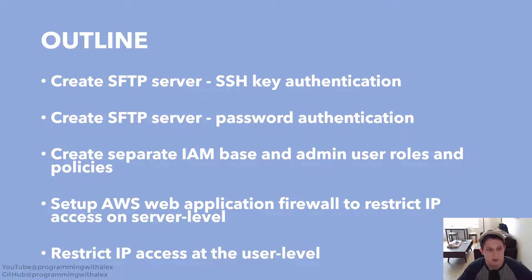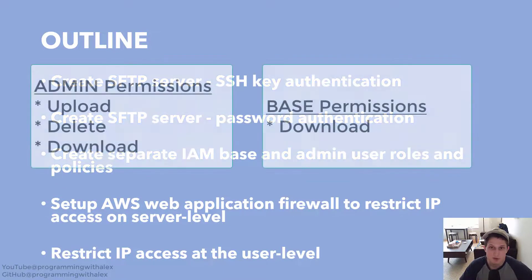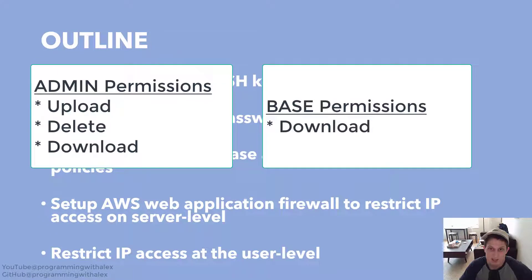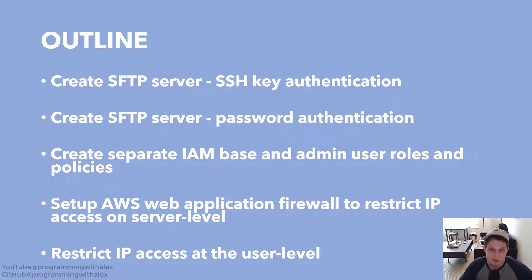For the outline: we're going to start off by creating the SFTP server out of the box provided by AWS with SSH key authentication — this is what Amazon provides out of the box. Then we're going to create an SFTP server using password authentication, which is much more helpful for less tech-savvy users and allows easier access. We're also going to create separate IAM base and admin user roles and policies. The admin user will be able to upload, delete, and download. The base user will only be able to download. A lot of other tutorials stop short of implementing these features, but we're going to cover them in this series.